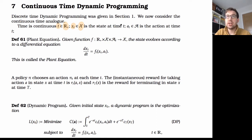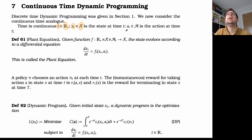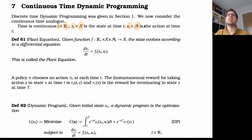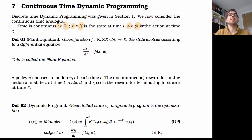Usually we'll imagine x belonging to some sort of vector space, like ℝⁿ or something like this. And then again, there are some actions a(t), which belong to some action set. We can allow ourselves to be a little bit more abstract about what the sets of actions are — we don't need to assume they belong to some set of real numbers or anything like this.